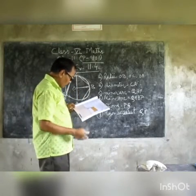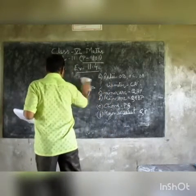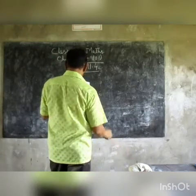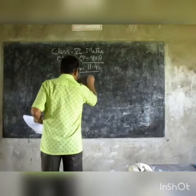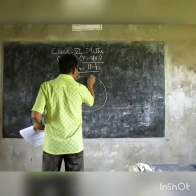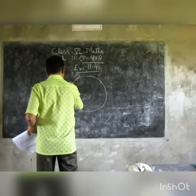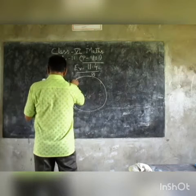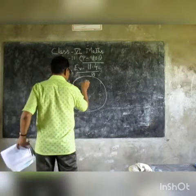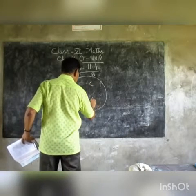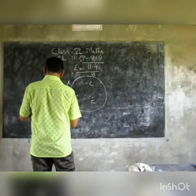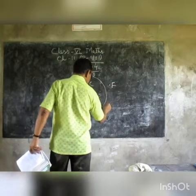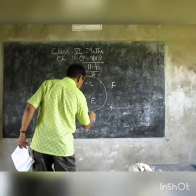Question number 2: Draw a circle and mark any two points on the boundary. Draw a circle — this is the circle. Mark two points A and B on the boundary. Then mark three points C, D, and E in the interior of the circle, and three points F, G, and H on the exterior of the circle.